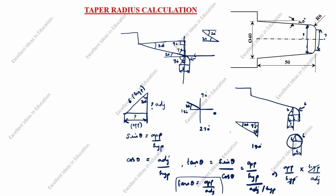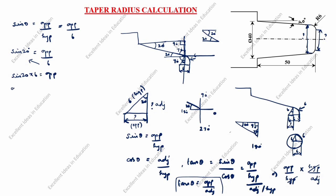Which formula will we take? Since opposite appears in two formulas, but we don't know opposite or adjacent, we won't take tan theta. We will take sin theta. We don't know the opposite value, but we know the hypotenuse is 6 and theta is 20 degrees. So sin 20 equals opposite over 6, which gives opposite equals sin 20 × 6 equals 0.342 × 6 equals 2.052.